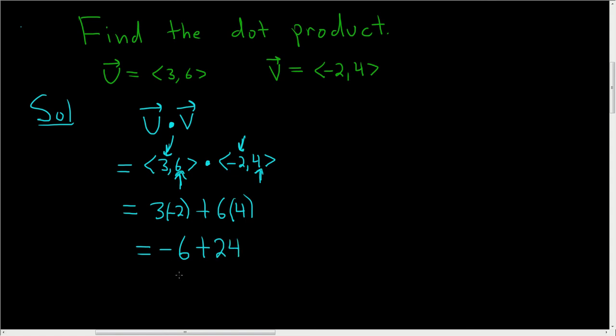So negative 6 plus 24, that's going to be equal to 18. And that's how you find the dot product of two vectors. That's it.